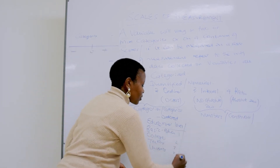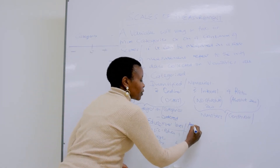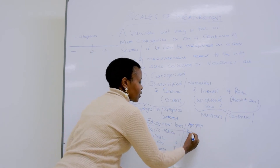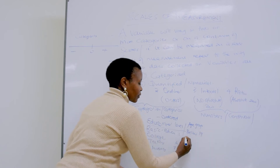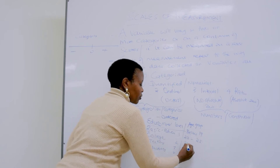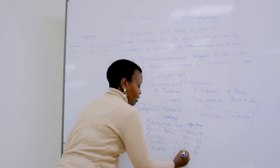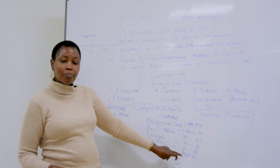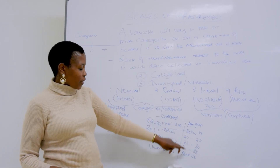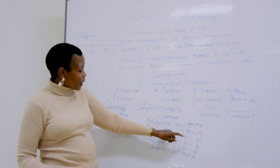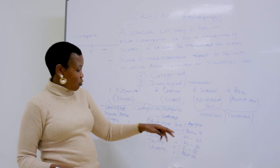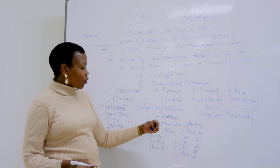Even if we want to talk about age group — we may say below 19, 20 to 25, 26 to 30, 31 to 35, above 36 — again, this is a variable that has been ordered from the lowest to the highest. There is some order. But the differences between these levels are not equal from one level to the other.